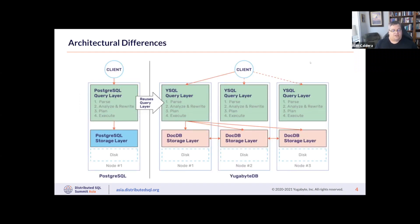Now let's talk about some architectural differences between SMP databases like Oracle and Postgres and YugabyteDB. In most SMP databases you have a single node with a query layer running in shared memory attached to some local disk, as demonstrated with Postgres on the left side of the diagram. In YugabyteDB we shard this query layer across multiple machines where each machine stores a different portion of the table.